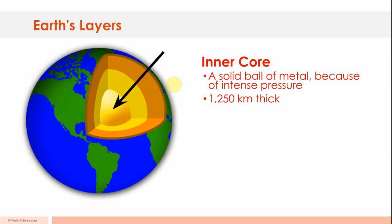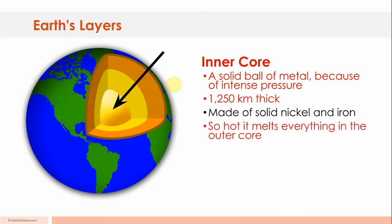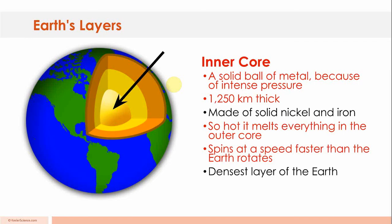1,250 kilometers thick. Made of solid nickel and iron. So hot it melts everything in the outer core. Spins at a rate faster than the Earth rotates. And it's the densest layer of the Earth.